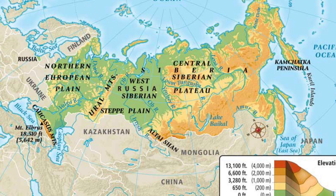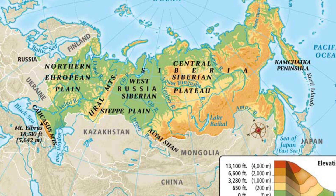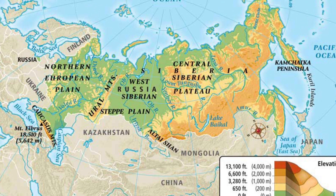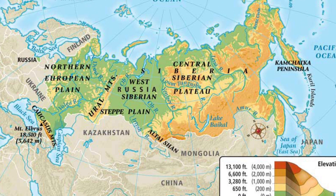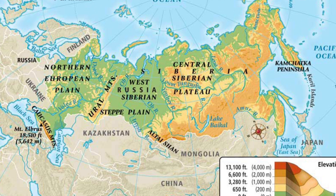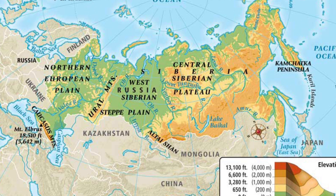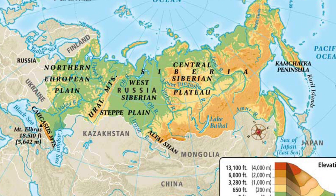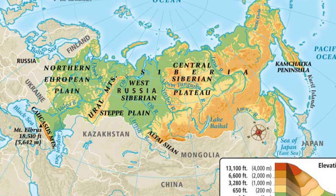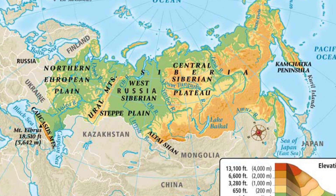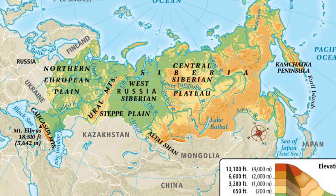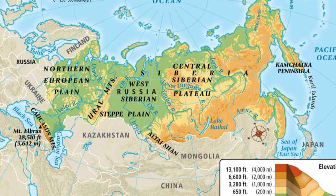The West Siberian Plain is one of the world's largest areas of flatland. However, being Siberian, it's cold, which reflects why the population density may not be very dense there.